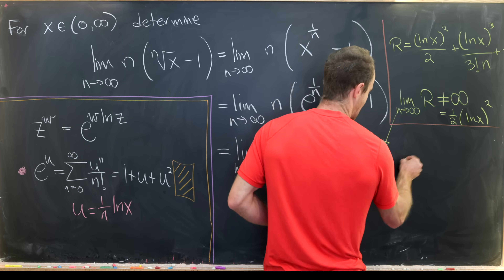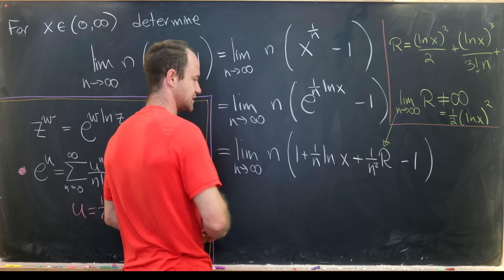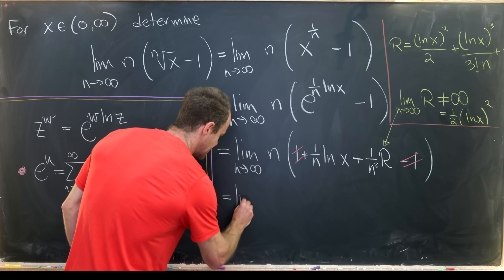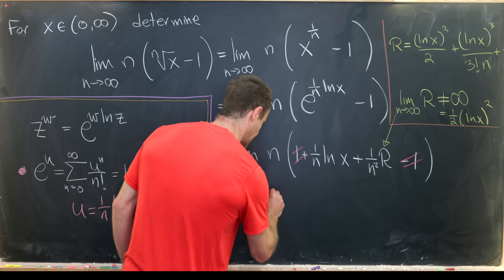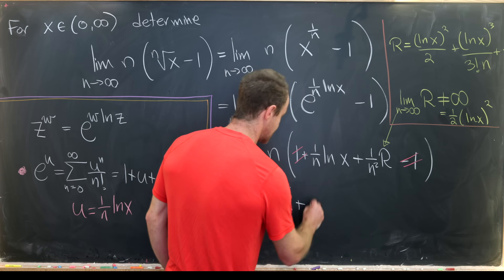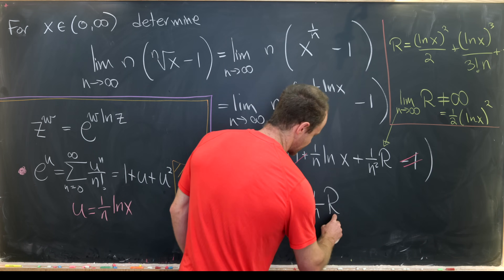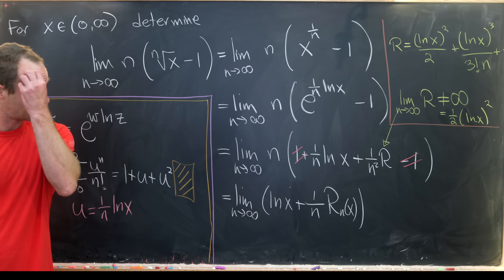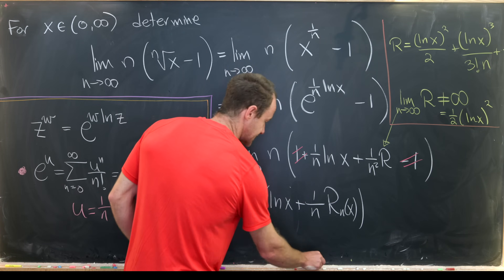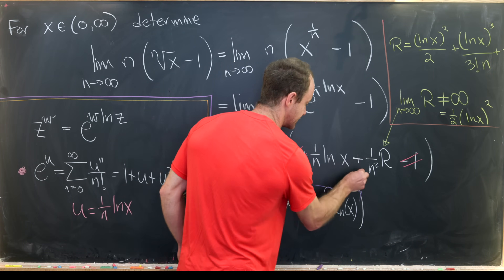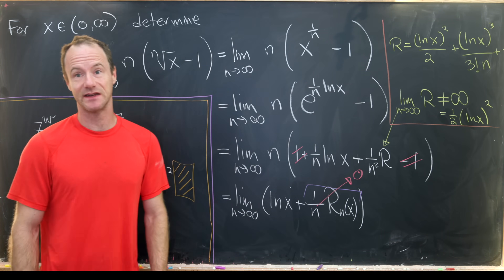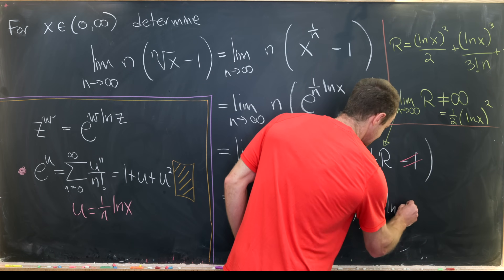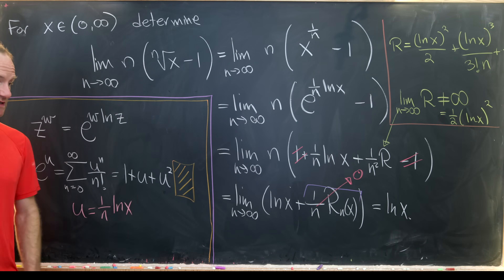Bringing down the minus 1, the 1 and minus 1 cancel. Multiplying the n through gives the limit as n goes to infinity of the natural log of x plus (1 over n) times the remainder term r_n of x. As n goes to infinity, the 1 over n times the remainder tends to 0 since the remainder doesn't go to infinity, leaving us with the natural log of x. So this limit equals the natural log function — the functions converge pointwise to the natural log.